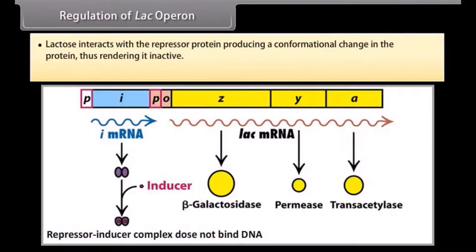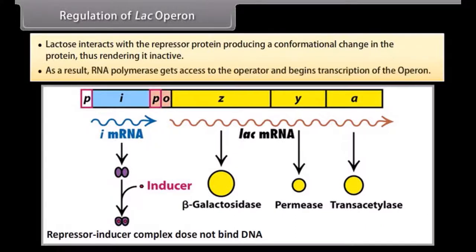When lactose is present, lactose interacts with the repressor protein producing a conformational change in the protein, thus rendering it inactive. As a result, RNA polymerase gets access to the operator and begins transcription of the operon.